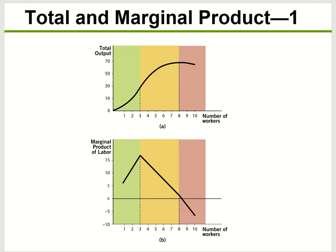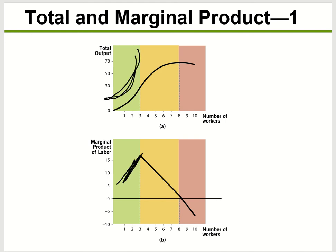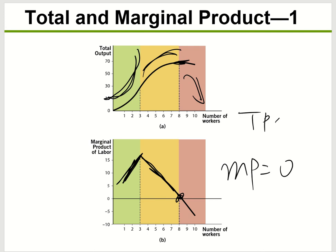If you graph your total production, it goes through three phases: first going up very fast, then slowing down, and then going down. This is all described by our marginal product. When total output is concave up, you see a positive or increasing marginal product. When it becomes concave down, your marginal product is decreasing but at its highest level. Before total product comes down, your marginal product equals zero. Whenever the marginal product equals zero, your total product is maximized — you're producing the most possible.